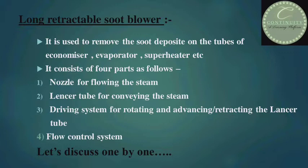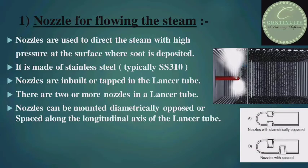Second, lancer tube for conveying the steam. Third, driving system for rotating and advancing or retracting the lancer tube. And fourth, flow control system. Let's discuss one by one. Nozzles are used to direct the steam with high pressure at the surface where soot is deposited. It is made of stainless steel, typically SS310. Nozzles are inbuilt or tapped in the lancer tube; there are two or more nozzles in a lancer tube. Nozzles can be mounted diametrically opposed or spaced along the longitudinal axis of the lancer tube. In the figure, A shows nozzles with diametrically opposed arrangement and B shows nozzles with spaced arrangement.